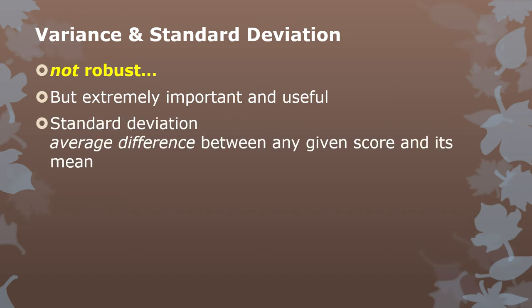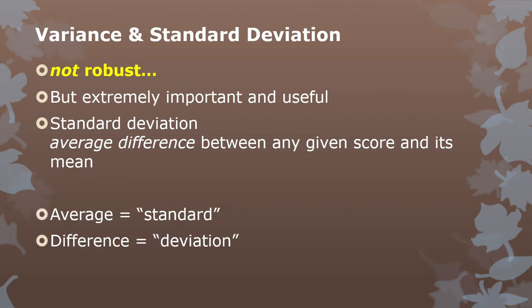The standard deviation, in words — this is a definition — it's the average difference between any given score and its mean, or the average difference between the individual observations and the mean. Average is indicated by the word 'standard,' which about 100 years ago more commonly meant something like average. And 'deviation' still means difference — we use it in mathematics and statistics to mean a difference between any two things. So the standard deviation is the average deviation of scores from the mean.